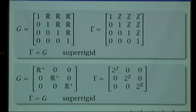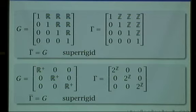The reason is that this group G is isomorphic to just R3 — just take logarithms. And inside R3, I'm just taking integer points. This is Z3 inside R3 under the isomorphism. And ZK is always superrigid in RK. So this is an example we've already done before, just written in a more complicated way.